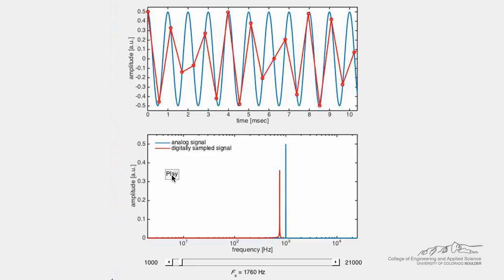If we press this play button, we will hear the effect of aliasing. The first tone is the original analog signal, and the second tone is the digitally sampled signal.